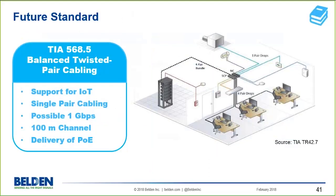Looking at the future: rather than just going faster, new technology is putting gigabit over one pair of Ethernet cabling. The new standard 568.5 is intended to support IoT — single-pair cabling targeting one gigabit over one pair for a 100-meter channel, with also the ability to deliver PoE to end devices. The standards are getting things ready for where the future is going, creating new ways of deploying structured cabling.